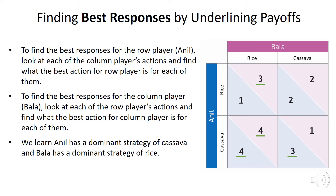That means Bala is going to prefer to play rice no matter what Anil decides to do. So both players have a dominant strategy — Bala to play rice, Anil to play cassava — and we end up in a dominant strategy equilibrium. We can tell there's an equilibrium because both payoffs in one cell are underlined. The two players prefer to specialize in the crop they're best at growing, and when Anil plays cassava and Bala plays rice the total payoff is 8, which is higher than in any of the other three squares.